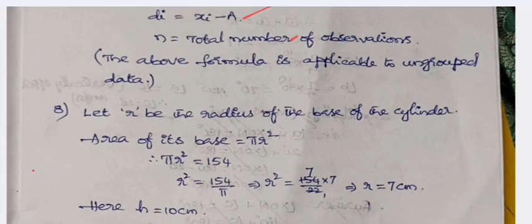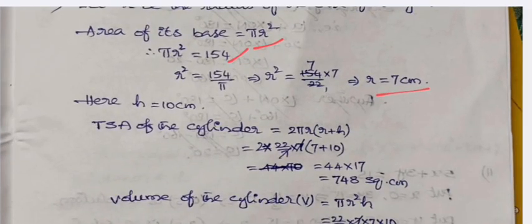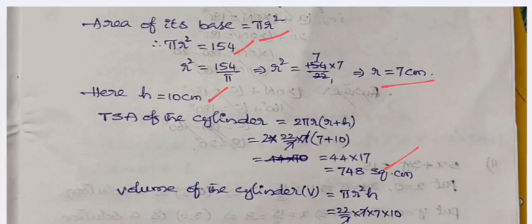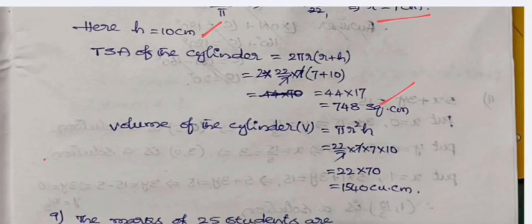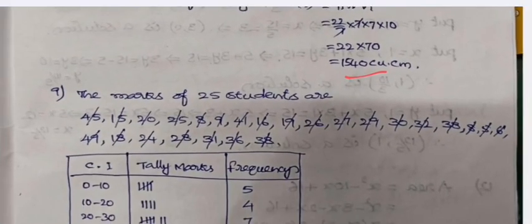Let r be the radius of the base of the cylinder. Area of its base is πr² and πr² = 154, so r = 7. Given that height of the cylinder is 10 centimeters, the total surface area is calculated using the formula 2πr(r + h), so it comes out to be 748. Volume of the cylinder V is πr²h. Substituting r and h, we get 1540 cubic centimeters.